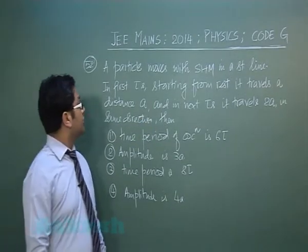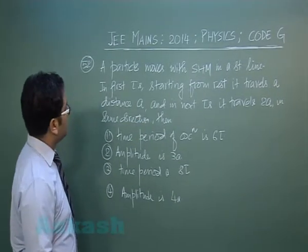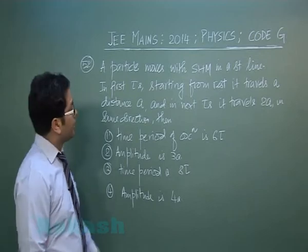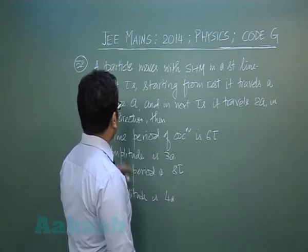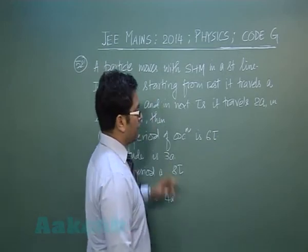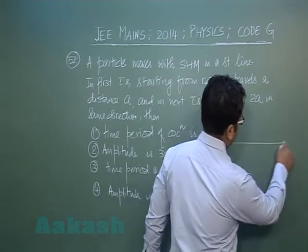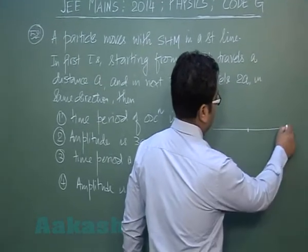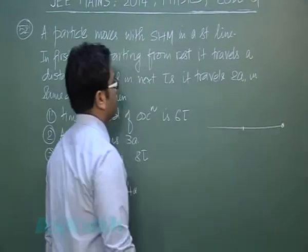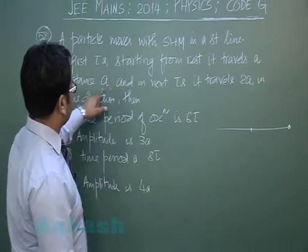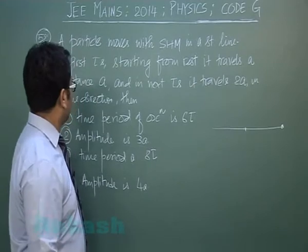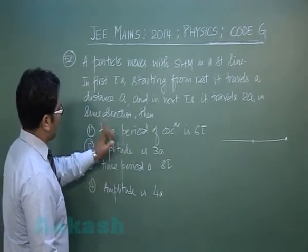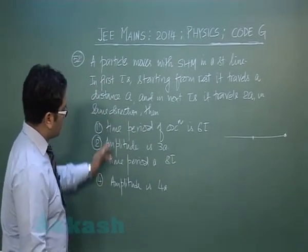Question number 52 is from SHM. A particle moves with simple harmonic motion in a straight line. In first τ seconds starting from rest - if it starts from rest, the particle has begun from the amplitude - it travels distance a. In the next τ seconds, it travels distance 2a in the same direction. We need to comment on the time period or amplitude.